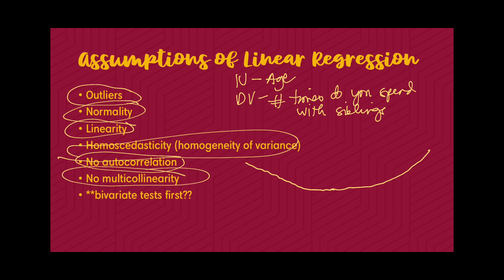There should be no multicollinearity, meaning there should not be very high relationships among the independent variables. If there is a high magnitude of relationship among independent variables, it is a violation of multicollinearity. This can produce unreliable estimates for individual predictors, misleading interpretation of how important a predictor is in terms of variance explained — especially in hierarchical tests — and can affect identification of significant predictors.